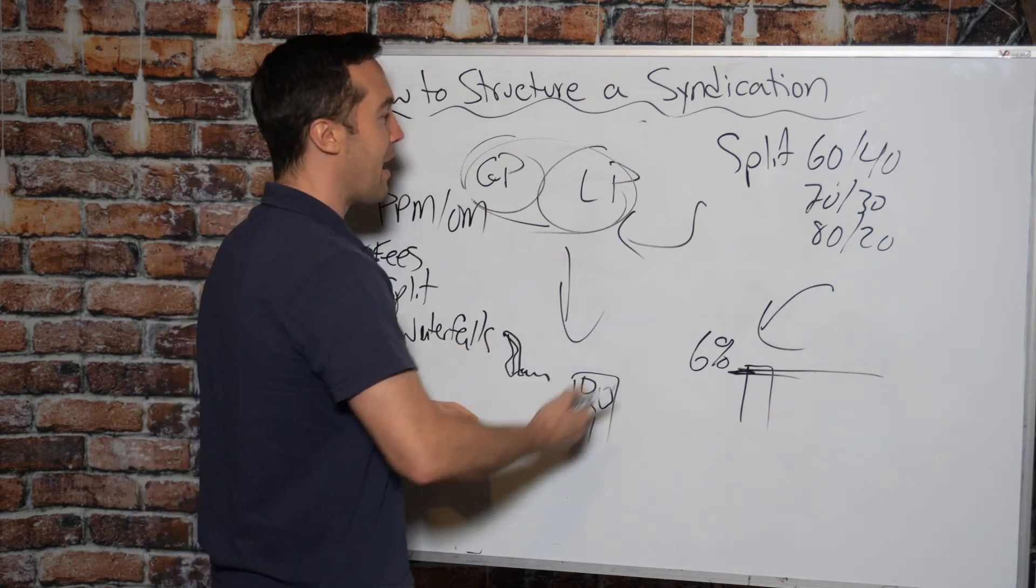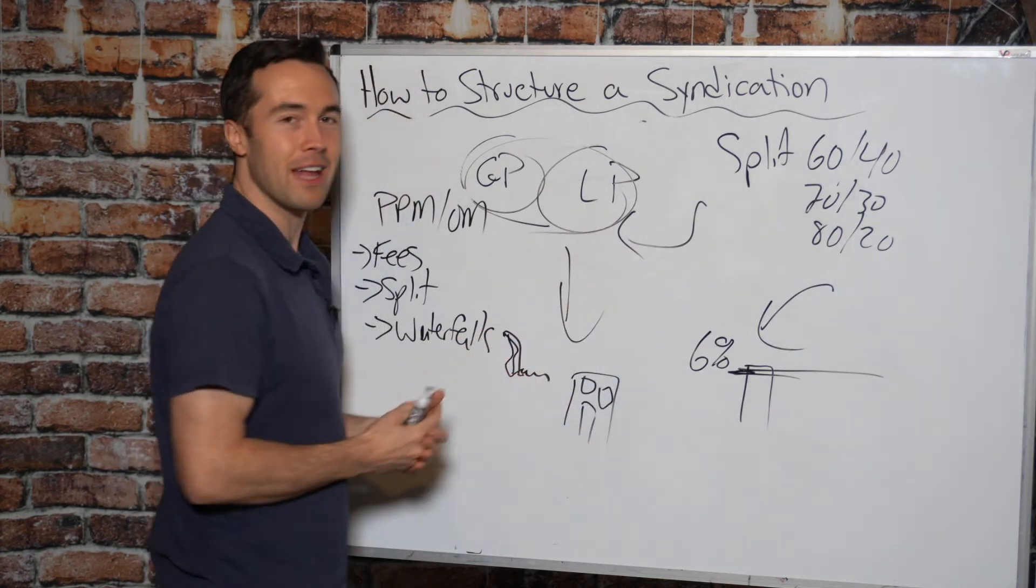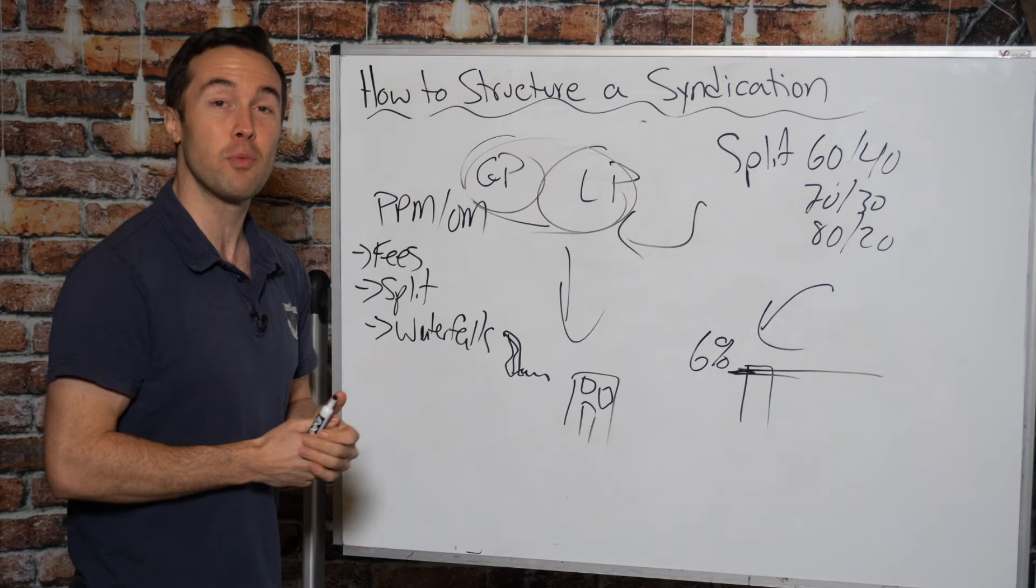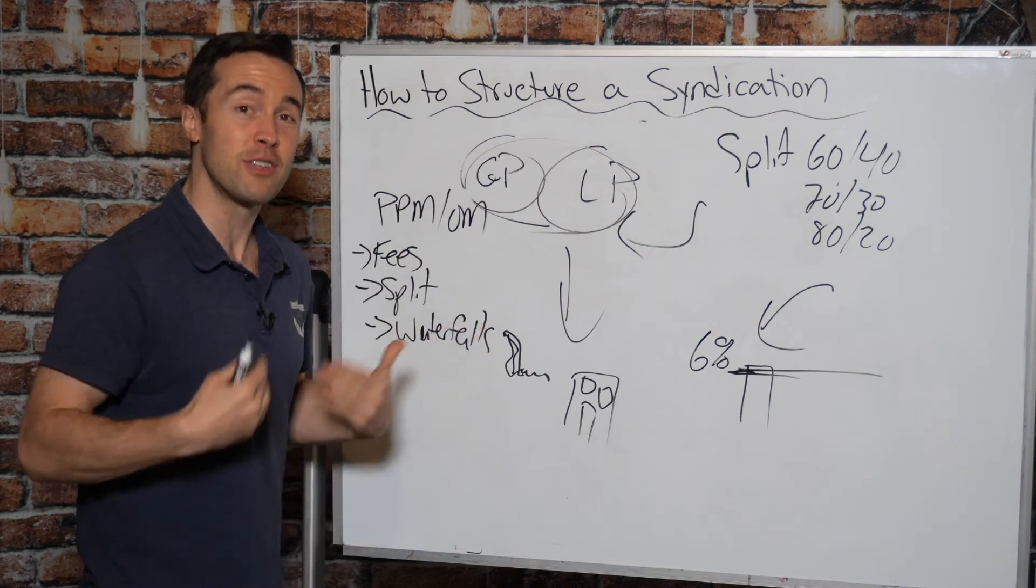This is why we have preferred returns and waterfalls to make sure that if the deal is performing, the general partnership gets paid and the investors are happy because they're earning their expected returns. But if the deal is not performing,